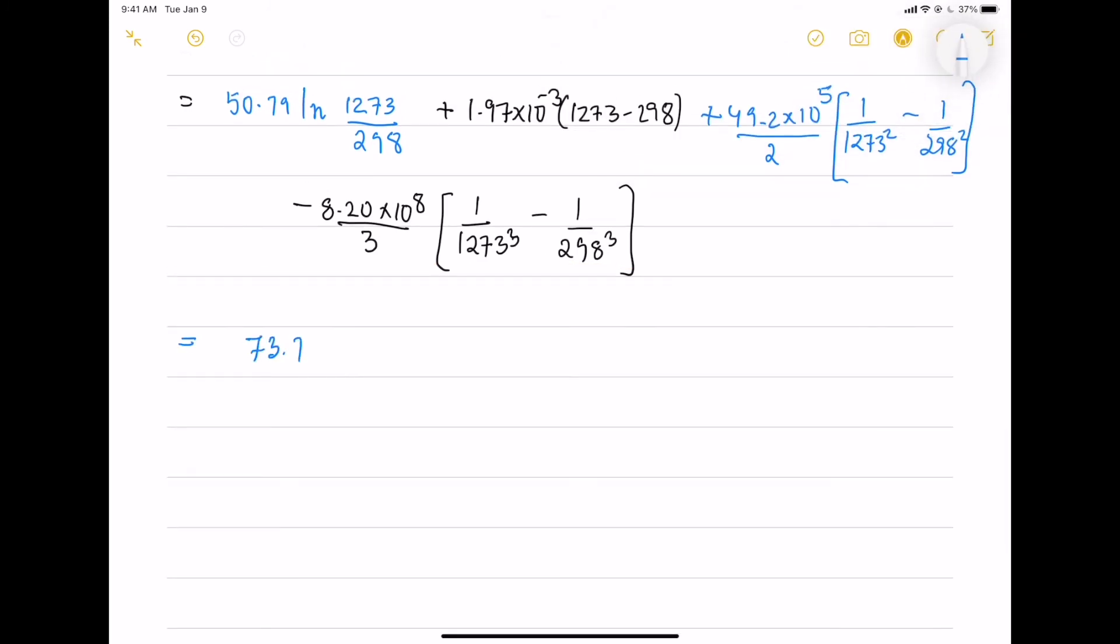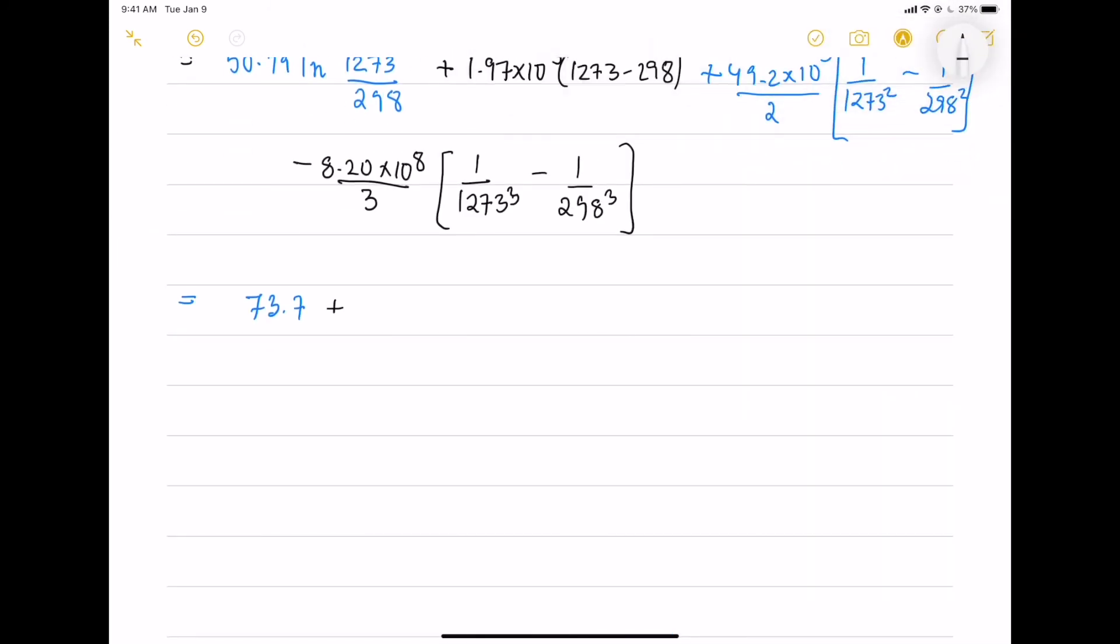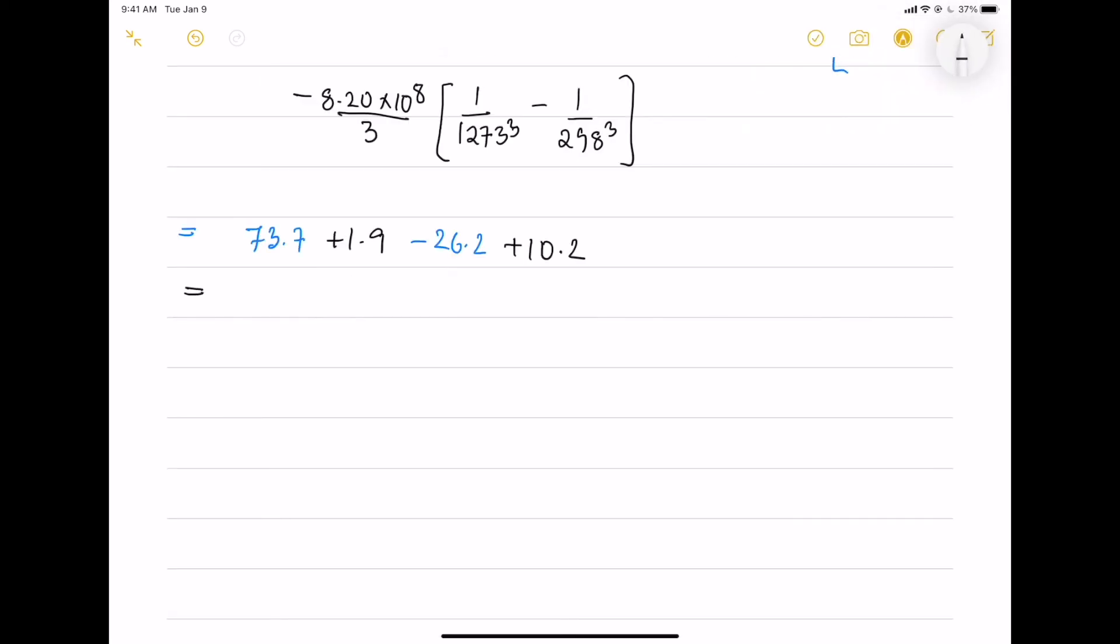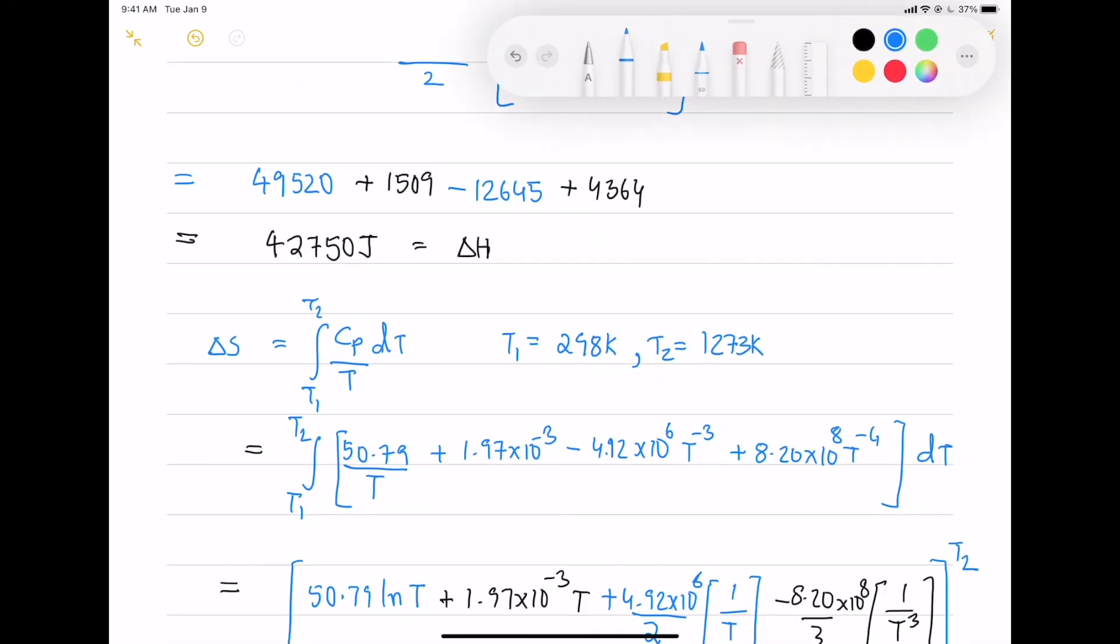For these four, we have four different values and we just do the addition subtraction. We will get 59.7 Joules per Kelvin as the change in entropy and the change in enthalpy is 42,750 Joules.